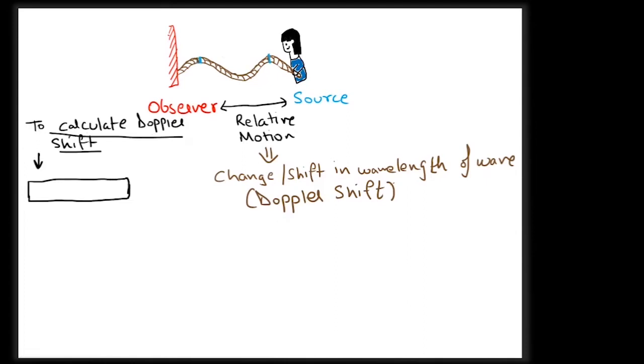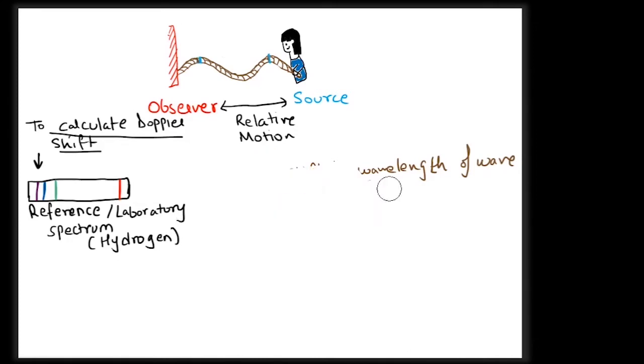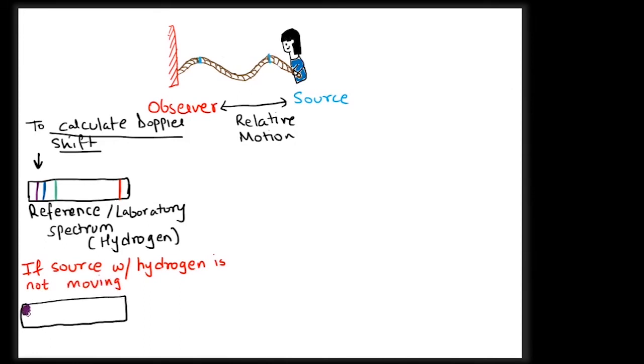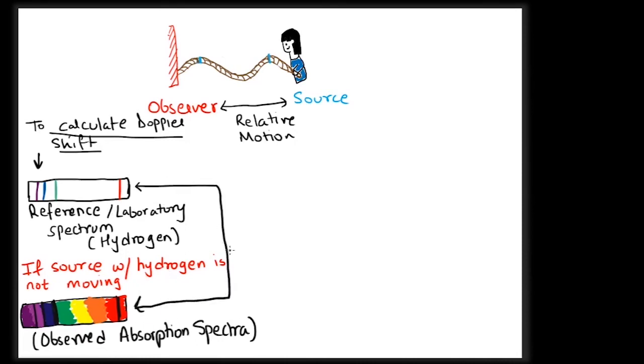To calculate the Doppler shift, one must have a reference wavelength to compare with the absorption wavelengths of the detected wave. For the reference spectrum, you may use the emission spectrum of an element you expect to find in the source. If the source were not moving, its spectrum would show absorption lines due to the element exactly at the wavelengths of the emission spectrum of this element. I have already discussed this in the second and third video of this series that an element's emission spectrum releases the same wavelengths as it absorbs in the absorption spectrum.